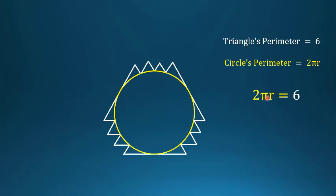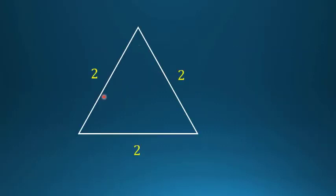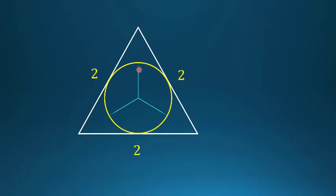Now I want to find π, so I need to find r. Consider again the equilateral triangle with all sides equal to 2 and its inscribed circle. If we connect from the center of the inscribed circle to all vertices and draw perpendiculars to all three sides, each perpendicular distance is r.